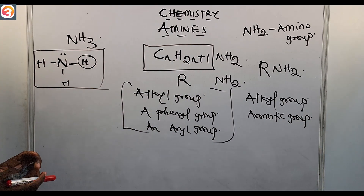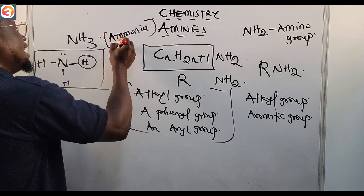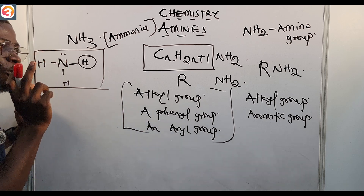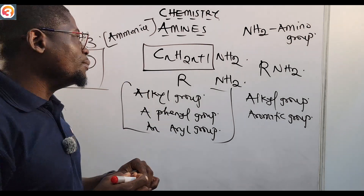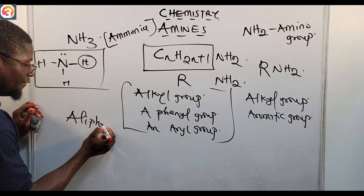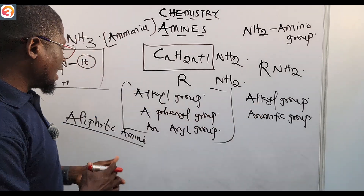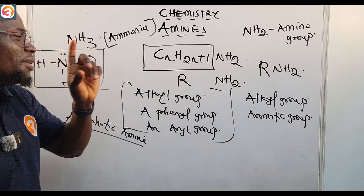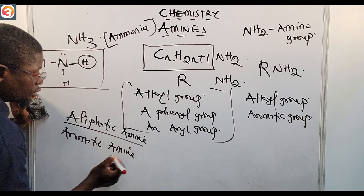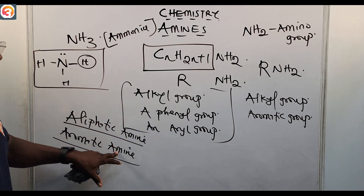An amine is a compound derived from ammonia (NH₃). If one of the hydrogen atoms in ammonia is replaced by an alkyl group, we call that an aliphatic amine. If the hydrogen atom is replaced by an aromatic group, we call that an aromatic amine. Take note of that distinction.